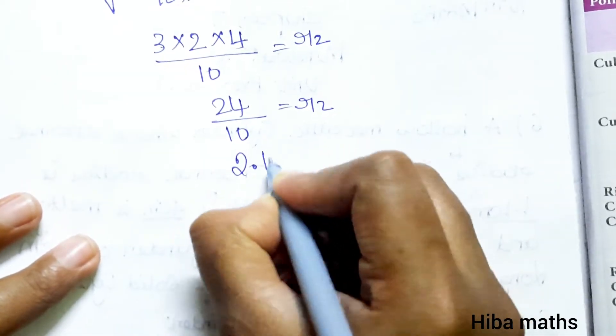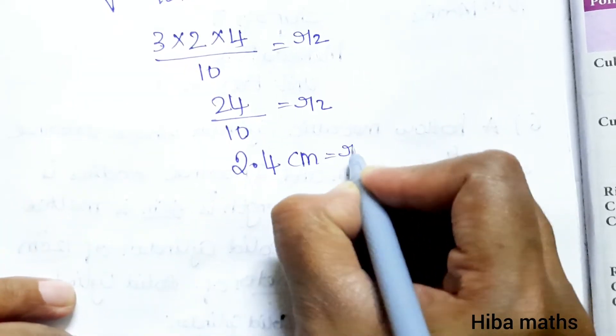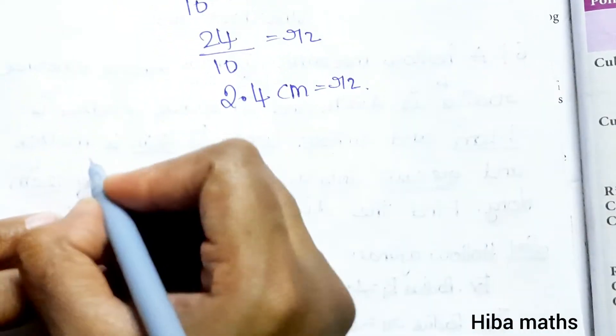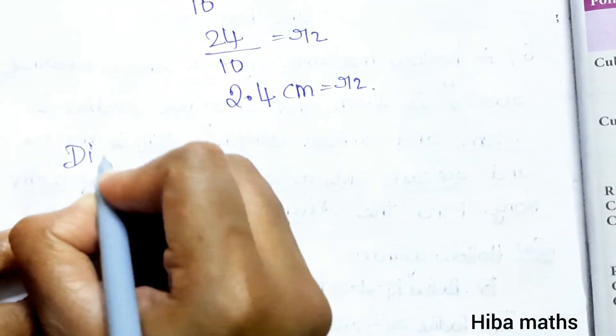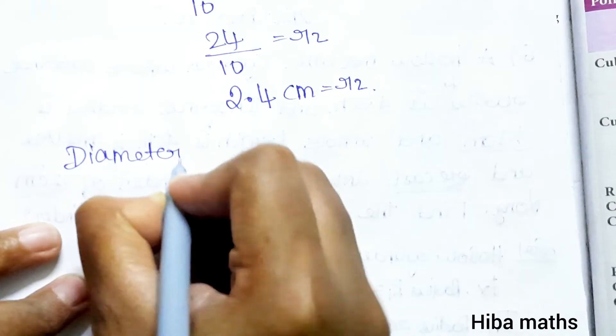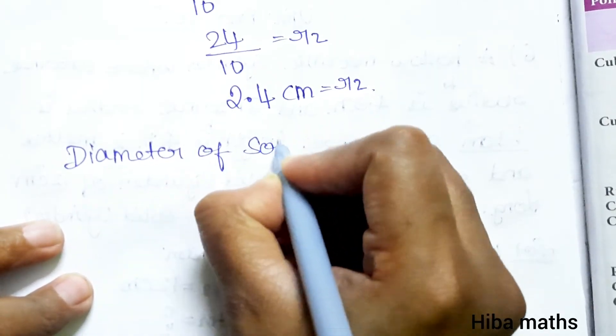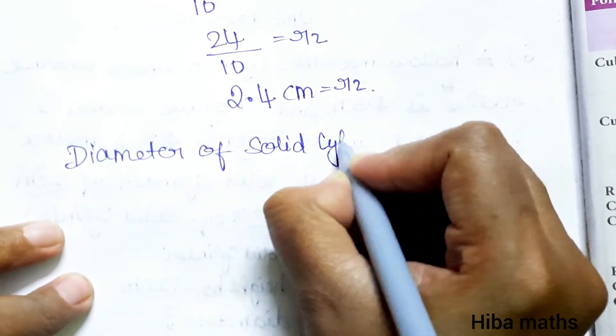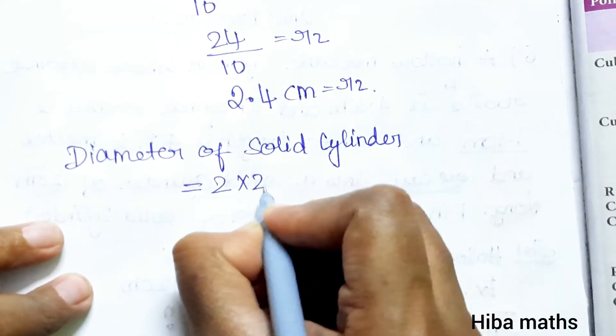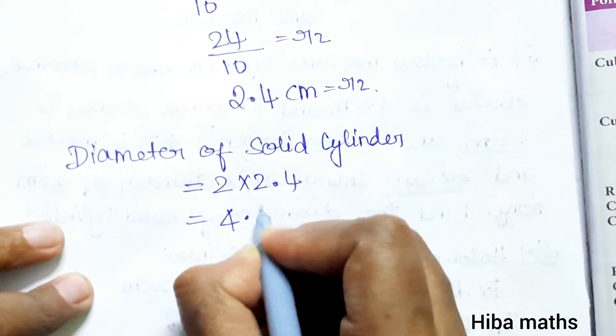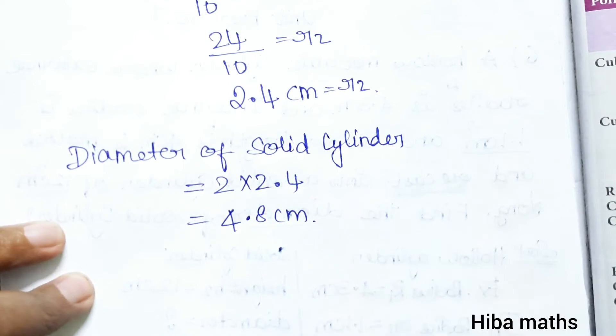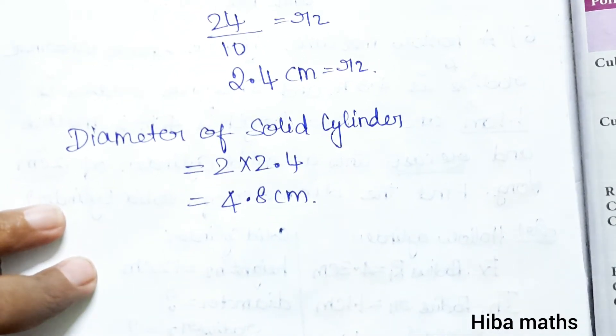So r2 squared equals 5.76, which gives r2 = 2.4 cm. Now we need the diameter. Diameter of solid cylinder is equal to 2 × 2.4, that is 4.8 cm. I hope you understand. Thank you so much for watching.